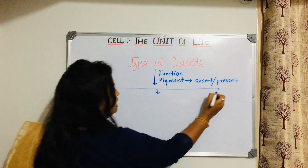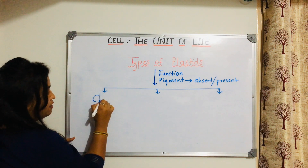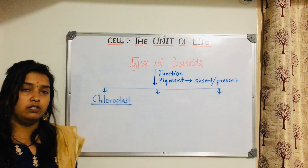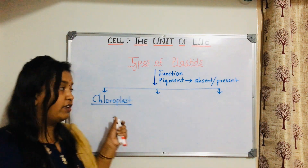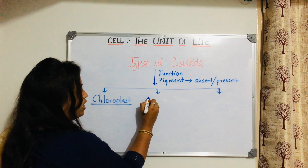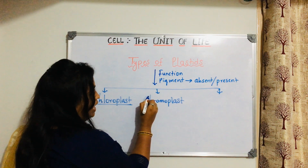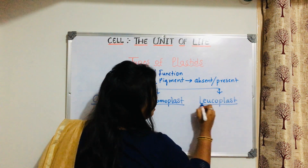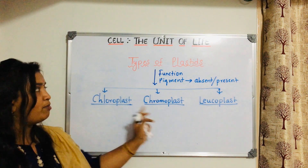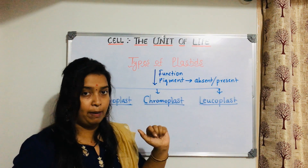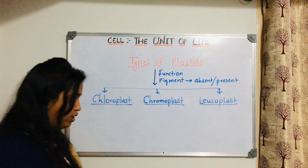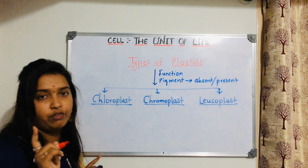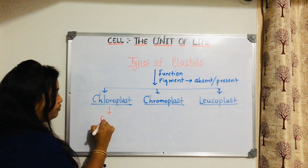The three types of plastids are: first, chloroplast - a very well-known cell organelle, very important for photosynthesis, which we studied in the photosynthesis chapter. Second is chromoplast. Third is leucoplast. Chloroplast - 'chloro' is specially meant for chlorophyll, so chlorophyll pigment is present in chloroplast, and some carotenes are also present.